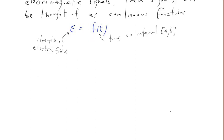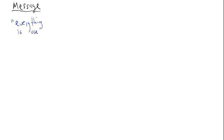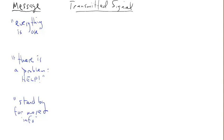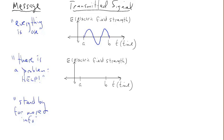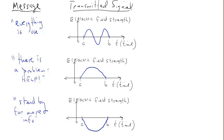Here's a simple example of using signals to communicate. Suppose there are three messages: everything is okay; there is a problem, help; and standby for more information. The first signal looks like a sine wave and communicates 'everything is okay.' The second signal rises and then falls, communicating 'there is a problem.' The third signal falls and rises, communicating 'standby for more info.' Those are the transmitted signals.